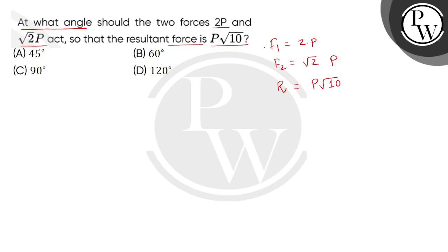And we need to find the angle between these two forces, so let's assume this is theta. We express the magnitude of the resultant of two forces as square root of F1 square plus F2 square plus twice of F1 multiplied F2 multiplied cos of theta.